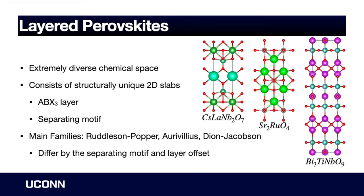There are two different types of slabs within a layered perovskite. The first, as you could guess, would be the perovskite slab, and it's separated from other perovskite slabs in this assembly by a separating motif.